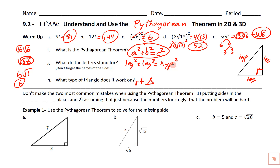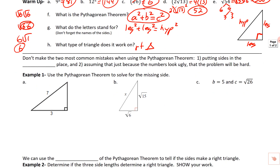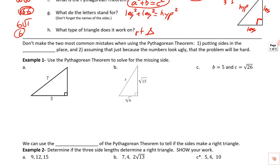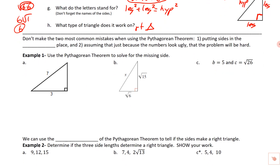There are lots of common mistakes people make when using the Pythagorean Theorem. The two most common: they put sides in the wrong place, forgetting that it's leg squared plus leg squared equals hypotenuse squared, so you must get the legs and hypotenuse in the right positions. The other mistake is assuming that because the numbers look ugly, the problem will be really difficult — it usually doesn't turn out that way.